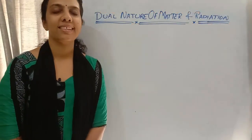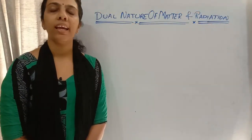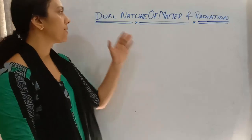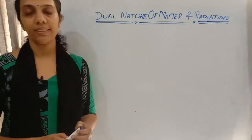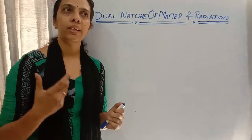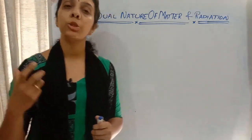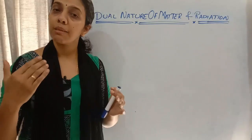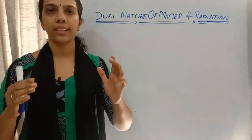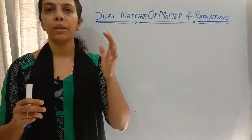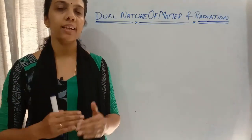Hello, dear students, welcome back to Learn Physics. In today's topic we are going to discuss about dual nature of matter and radiation. Last class we learned about electron emission and types of electron emission, and what is meant by photoelectric emission — we covered all of that in experimental study.